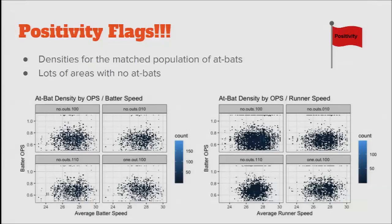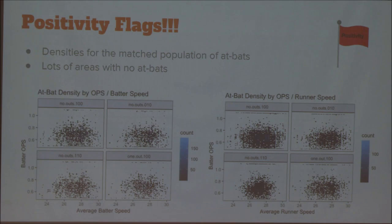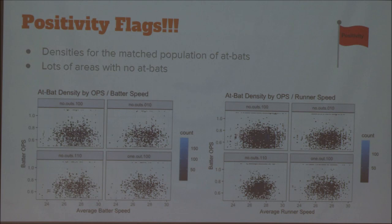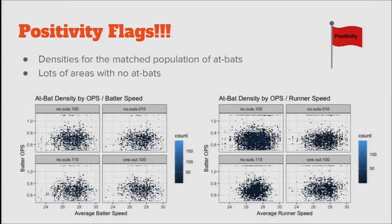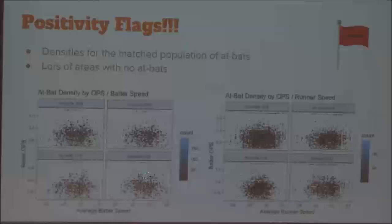Positivity flags: now is the time to actually stop and think about this. We want to look at when there actually are bunts in the situations we're thinking about. We're controlling for a lot of covariates — how much are we going to run into sparsity problems? We look at the densities of when we see at-bats, split by batter OPS versus batter speed, and batter OPS versus runner speed. There are whole areas where there just aren't any at-bats at all. The only spaces where we can say anything are spaces where we actually have observations. Modeling borrows information from what we do have, but the further we get from observations into big empty spaces, the less it makes sense.